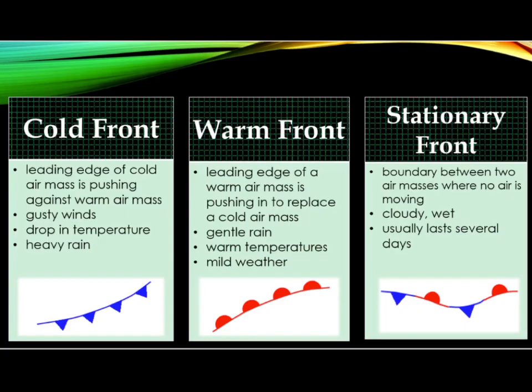A stationary front is the boundary between two air masses where no air is moving. It typically brings cloudy and wet weather, and it usually lasts for several days. This blue symbol is used to represent a cold front, this red symbol represents a warm front, and the blue and red symbol represents a stationary front.